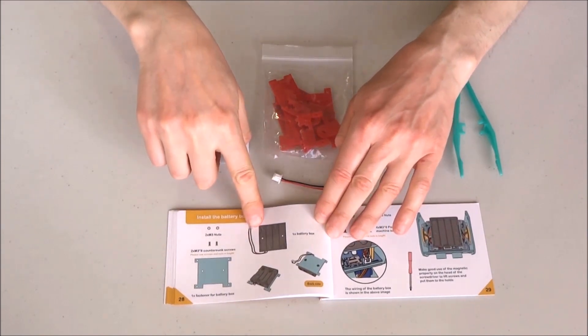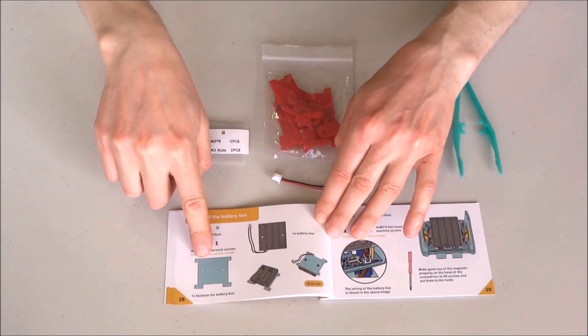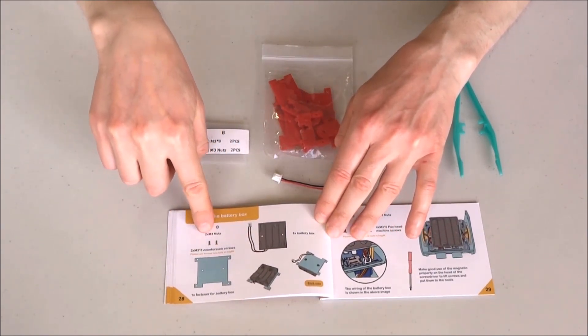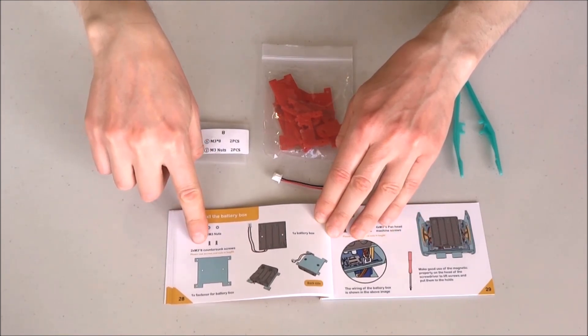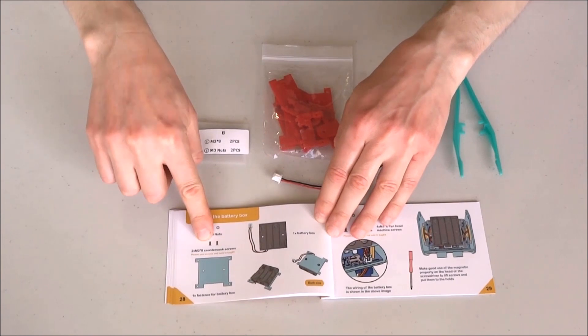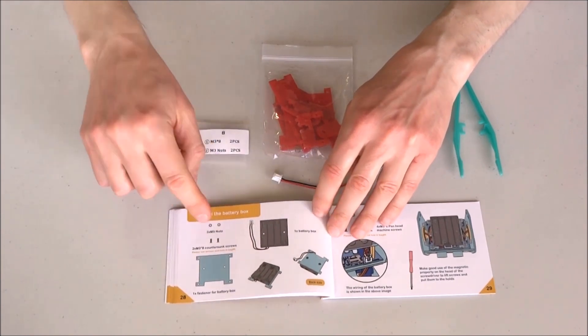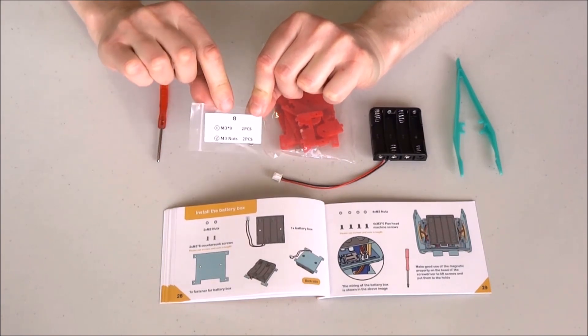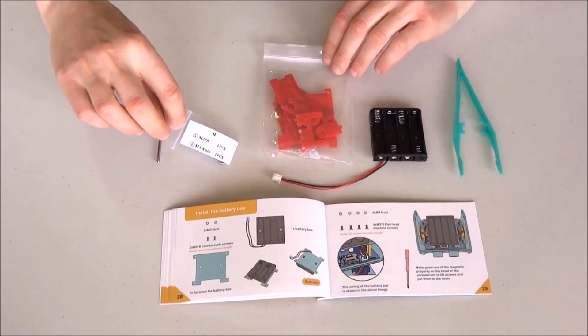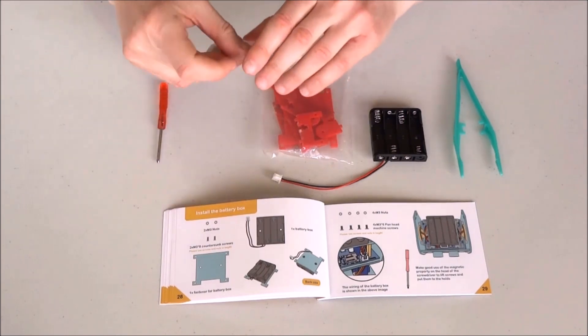Now I will install the battery box on its base plate using two M3 nuts and two M3 by eight countersunk bolts. In my case, in this bag labeled number eight, I will start by taking out the bolts and nuts.